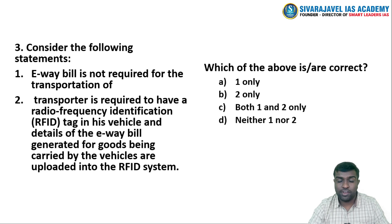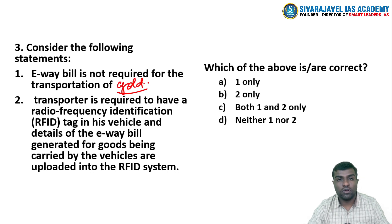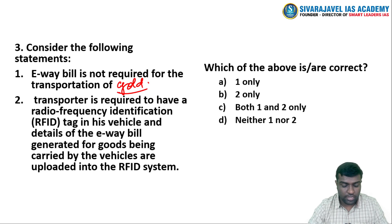The first statement says that the e-waybill is not required for the transportation of gold. The second statement says that the transporter is required to have a radio frequency identification (RFID) tag in his vehicle, and details of the e-waybill generated for the goods being carried by the vehicle are uploaded into the RFID system.